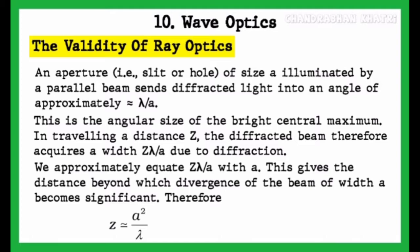The beam therefore acquires a width z·λ/a due to diffraction. We approximately equate z·λ/a with a. Here, a is the size of the aperture. This gives the distance beyond which divergence of the beam becomes significant.